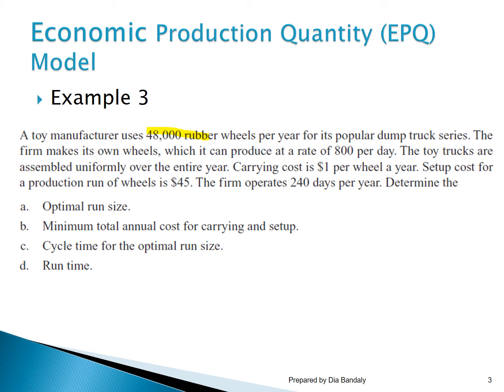Let's identify what we are given. Capital D is 48,000 units per year. The production rate of 800 per day is small p. The carrying cost of $1 is small H. The setup cost is $45. We have everything; all we need to do is plug these figures into the formulas we have learned.